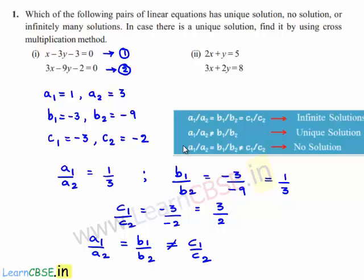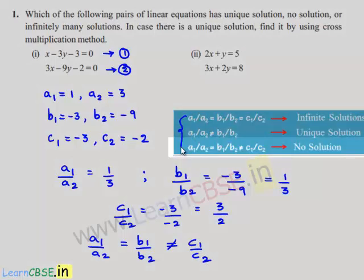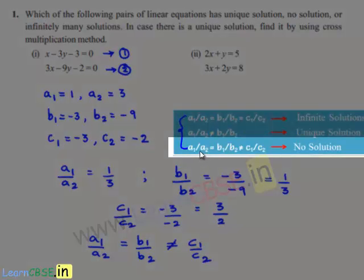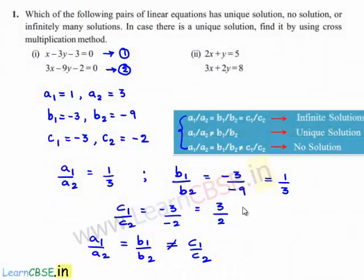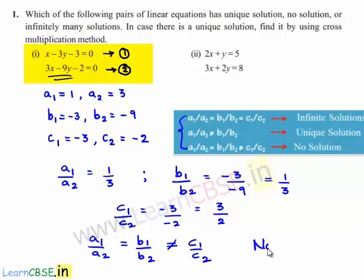So if we observe from these three conditions, the condition says that if a1/a2 = b1/b2 ≠ c1/c2, the given set of linear equations has no solution. Therefore, according to the given conditions, we can say that the given set of linear equations has no solution.